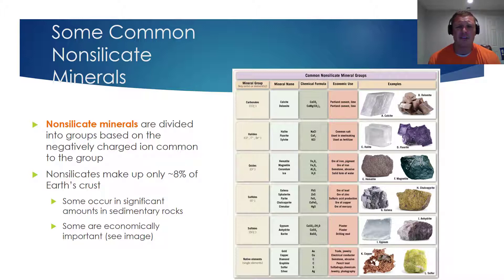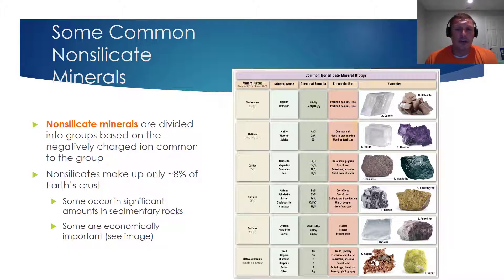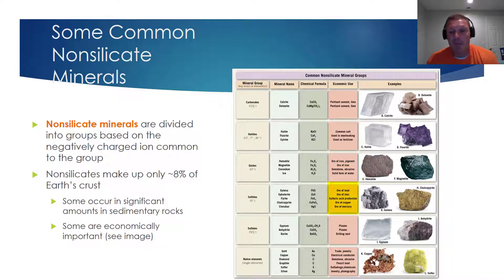As an educator, one of the most important things I like to stress are the real-world implications of what you're teaching. I don't think it's necessary to memorize the chemical formulas on this slide, but what is important is understanding the real-world relevance. The carbonate mineral group is essential for the production of cement and lime. The halides are used for steel making and as fertilizer — something that impacts all of us in the Midwest. Oxides are essential for the production of iron. The sulfides produce ores of lead, zinc, copper, and mercury — all with very important industrial and economic value. The sulfates allow us to produce plaster and drilling mud.